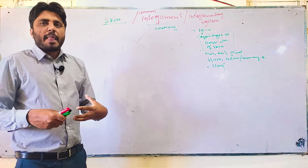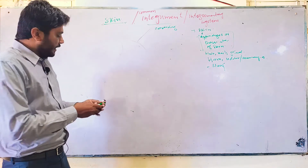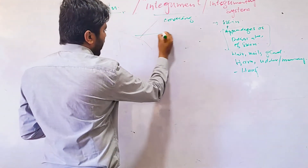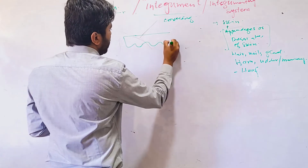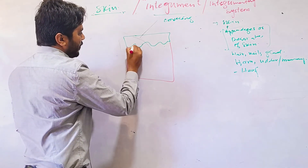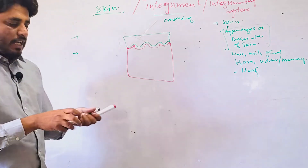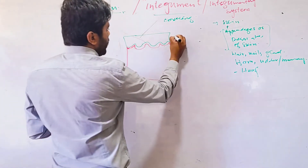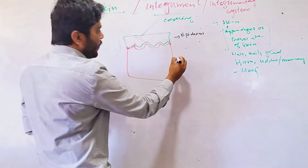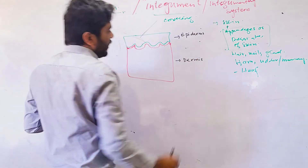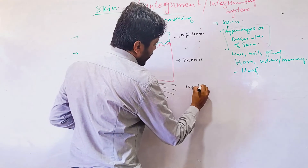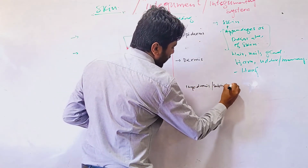Looking a little more deeply, skin actually consists of two layers. The upper one is known as the epidermis, and the lower one is known as the dermis. Some people believe there is a third layer called the hypodermis, also called the subcutaneous layer.